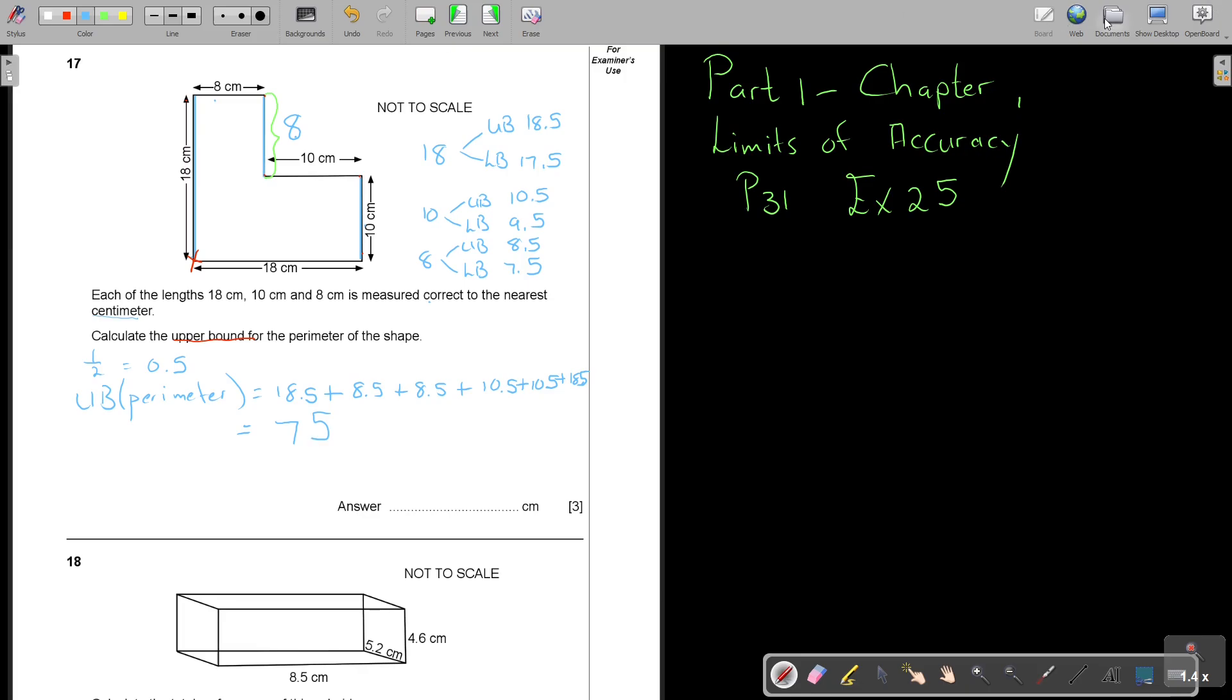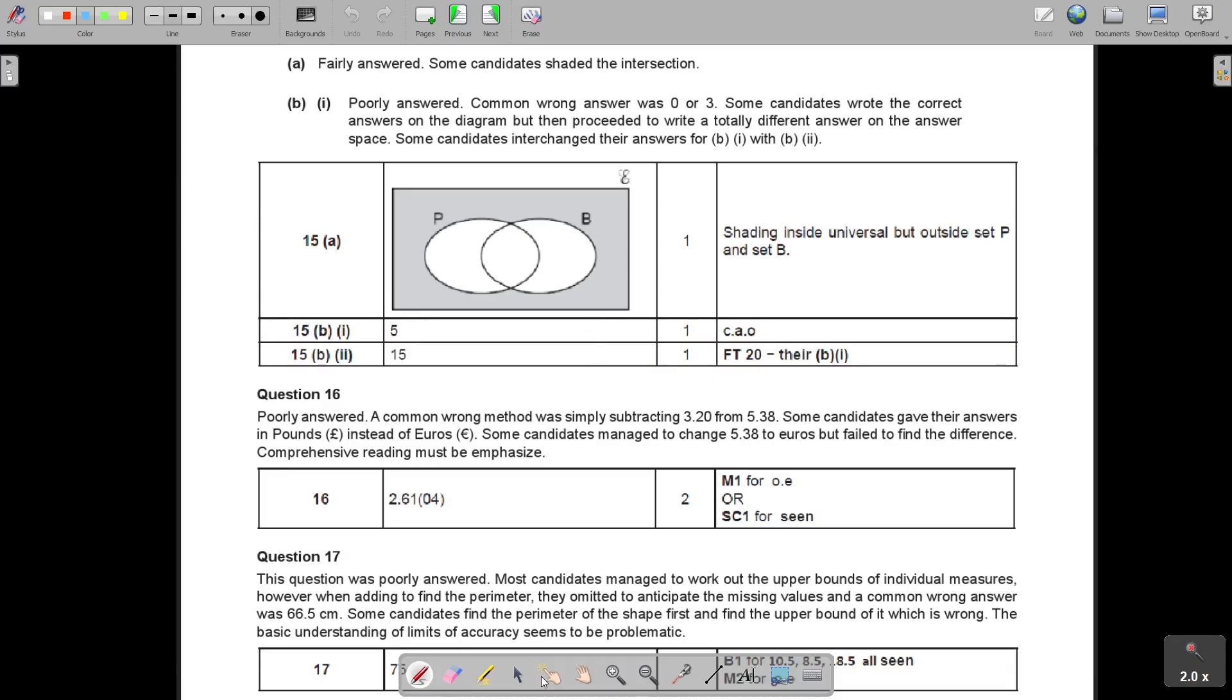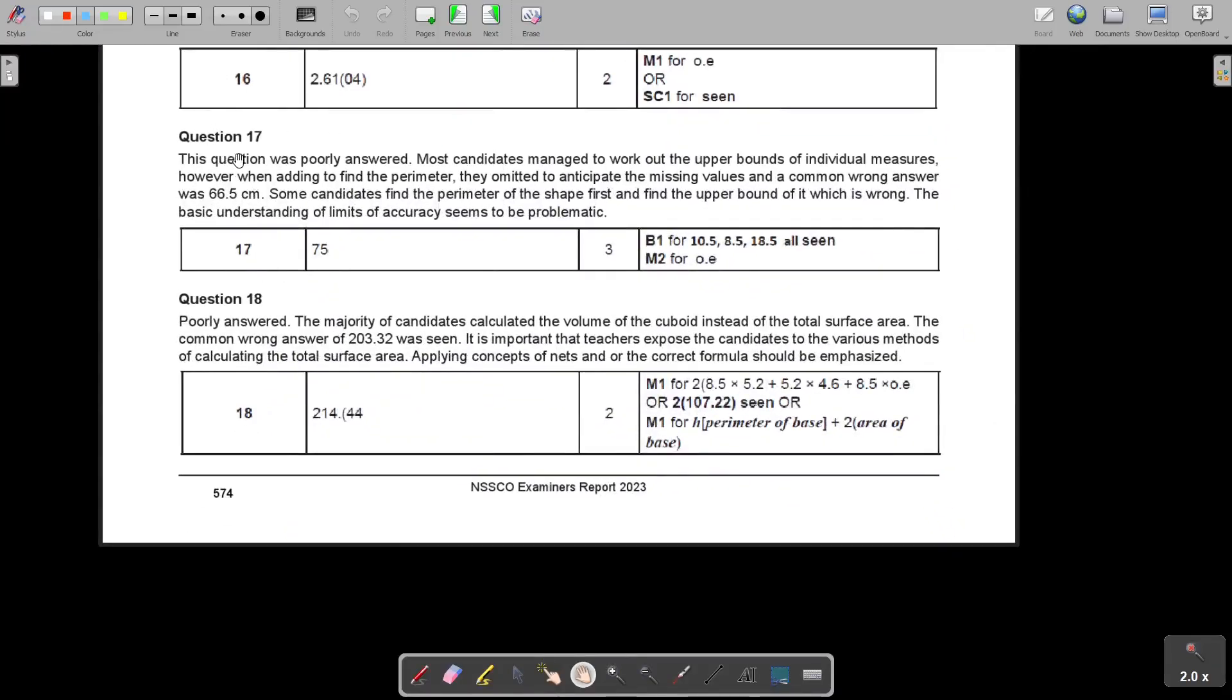Let's just go to the exam report. Question 17, this question was poorly answered. Most candidates managed to work out the upper bounds of the individual measures. However, when adding to find the perimeter, they omitted to anticipate the missing values. Some candidates find the perimeter of the shape first and then find the upper bounds, which is wrong. The basic understanding of limits of accuracy seems to be problematic.